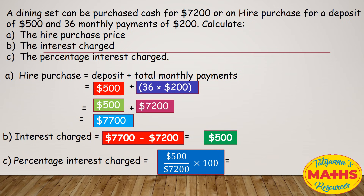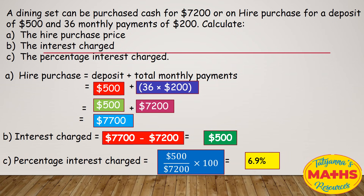We want the percentage, so you have to multiply by 100. When we do that, we're gonna get 6.9%. So the percentage interest charge is 6.9%. I'm Tatiana from Tatiana's Math Resources — stay tuned for more.